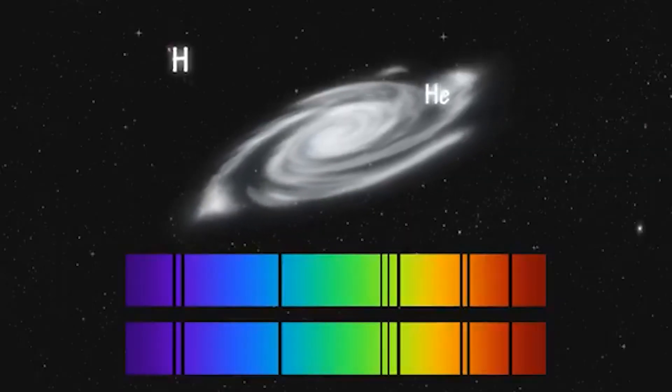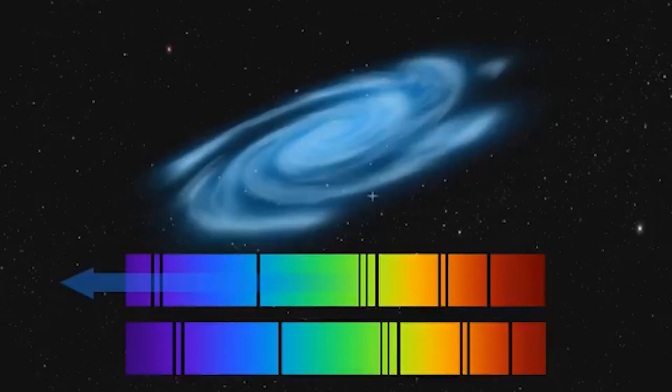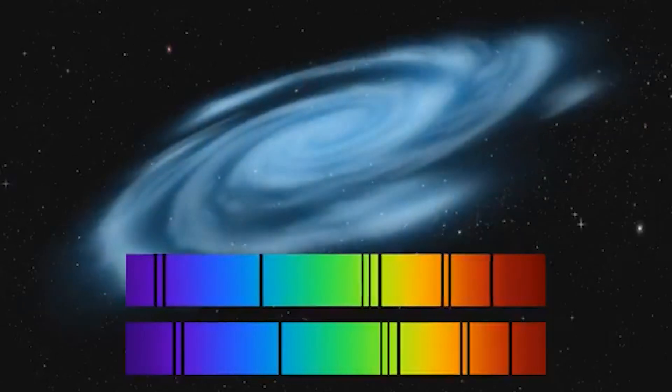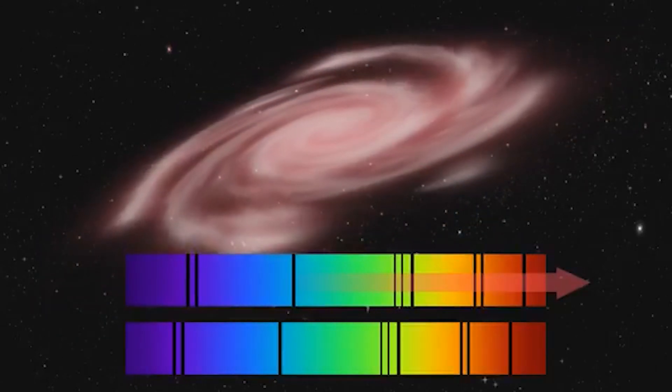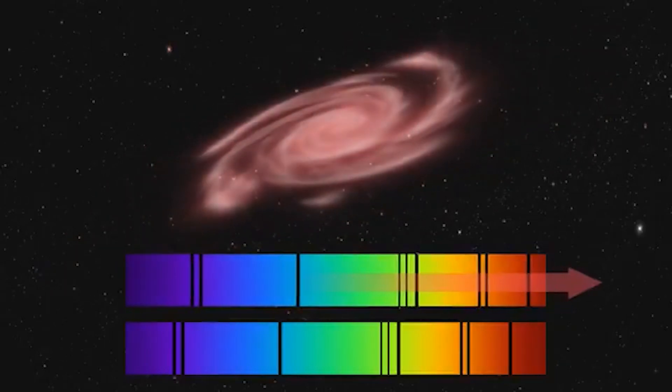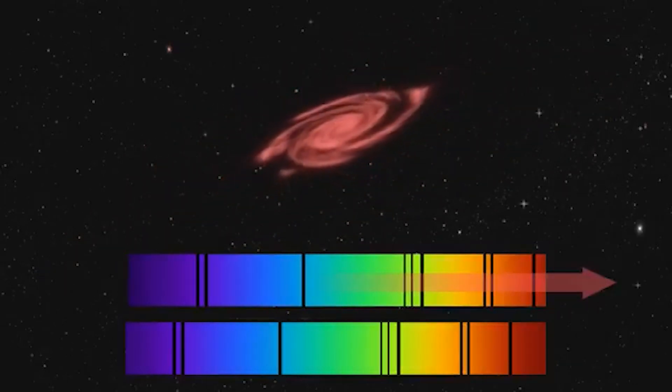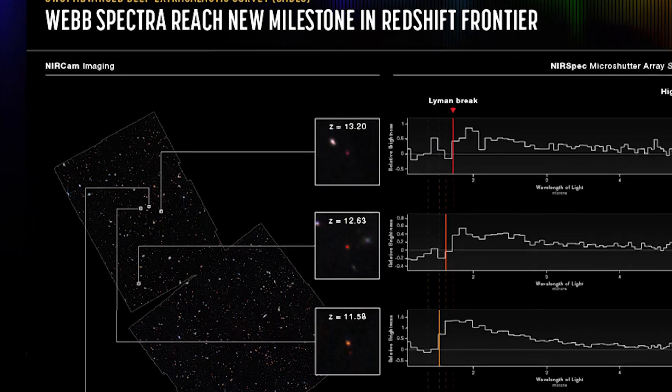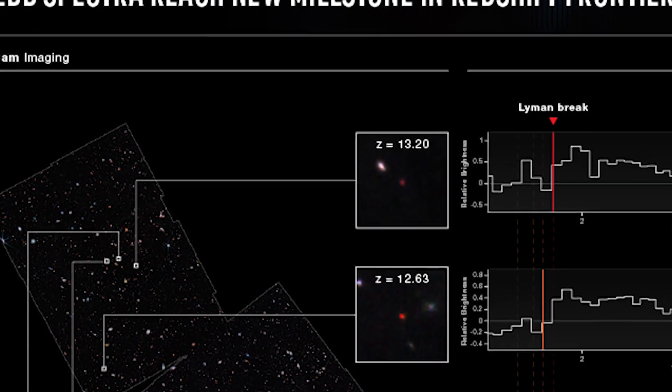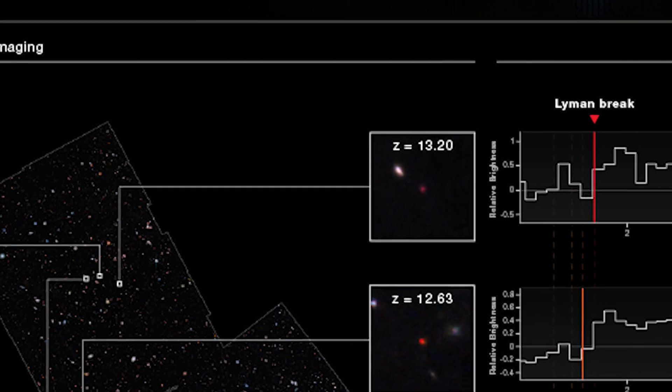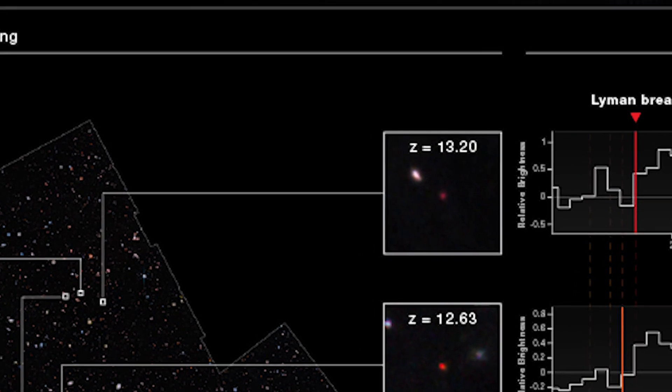The term redshift is used by astronomers when discussing vast distances. It's a way to measure how much the expansion of the universe has caused the wavelengths of light from faraway galaxies to get longer. The JADES galaxy has a redshift of 13.2, indicating how far away it is, as greater distance causes more stretching.